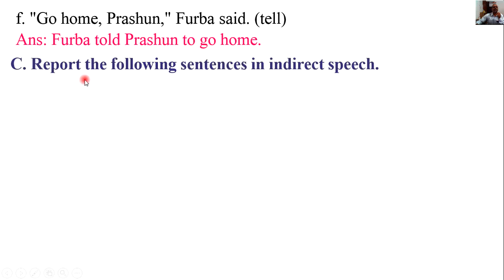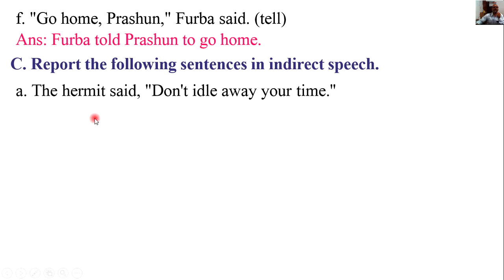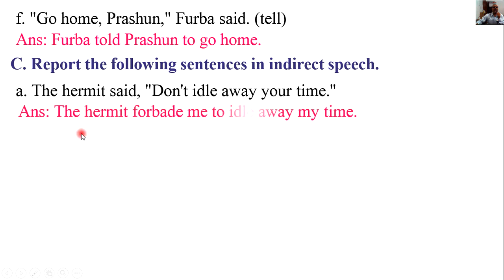Report the following sentences in indirect speech. The hermit said, 'Don't idle away your time.' The hermit forbade me to idle away my time. The verb 'forbid' is used when reporting a prohibition.